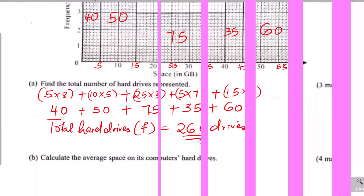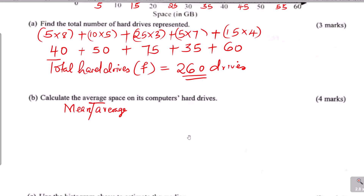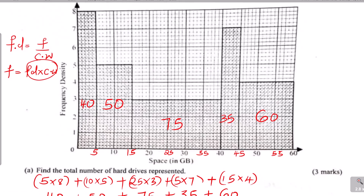We go to the second part: calculate the average space on the computers' hard drives. The average space is the mean. To get the mean from this histogram, we are going to construct a table having the frequency and the classes, which will help us calculate the mean. For example, the first class is from 0 to 5, the next from 5 to 15, and so on.